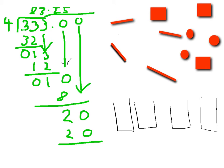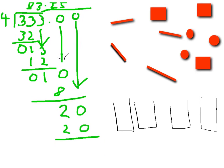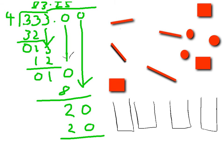This is the second way with numbers. Okay, I have 333. So these are the 300 square blocks.